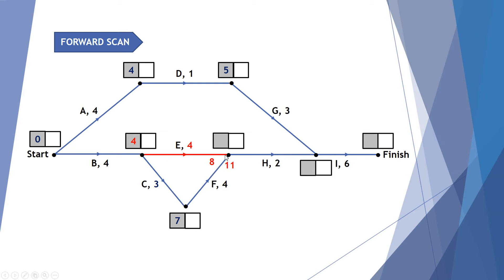If we put in eight here it means we can start H before we've actually finished C and F. So we've got to consider all the activities must be completed by the time we start activity H. So it will take eight weeks to do B and E and it will take 11 weeks to do B, C and F. So we have to put in the 11. On a forward scan we take the larger number.